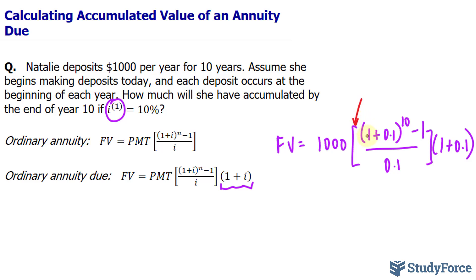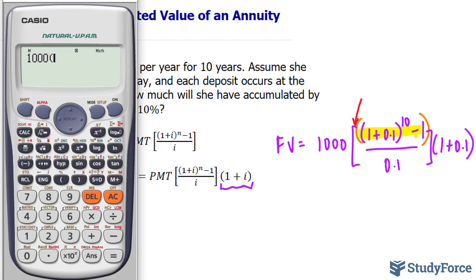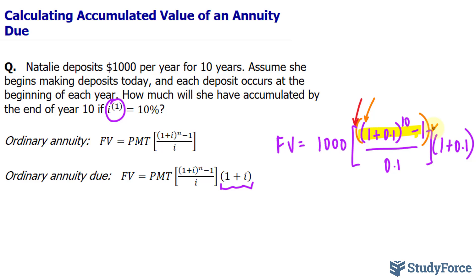In addition, I'll put this expression, the numerator, within its own parentheses. So I'll open up the orange one, and then the purple one again. So 1 plus 0.1, and I'll raise that to an exponent of 10, minus 1, close the orange, divide by 0.1. And we close the purple.